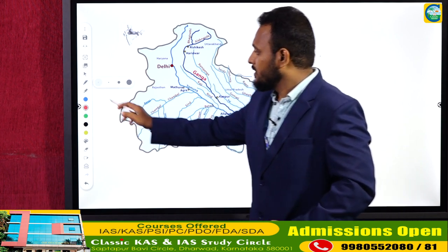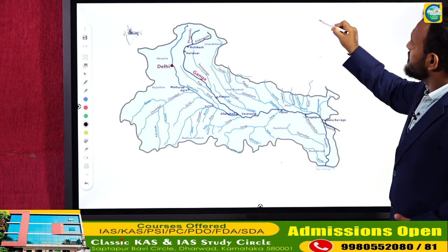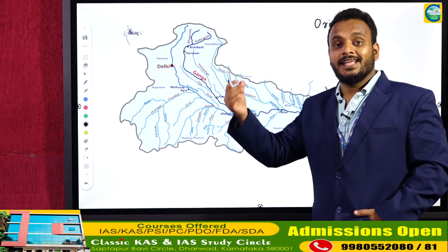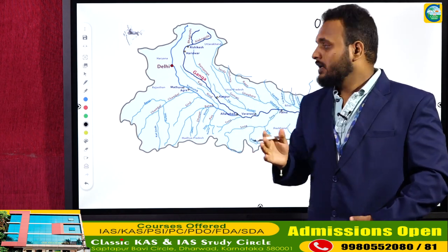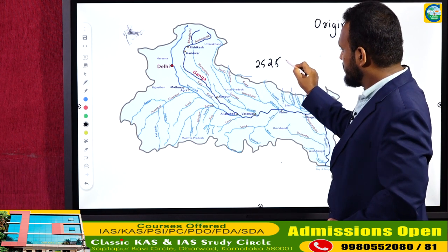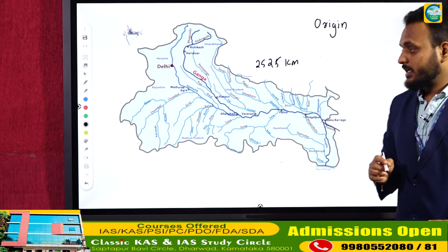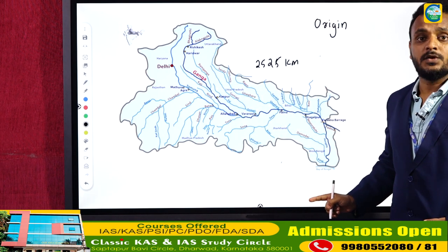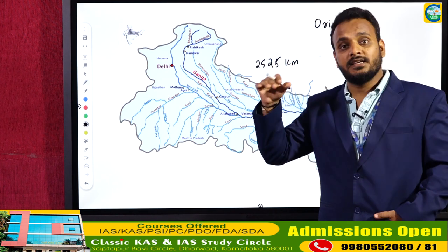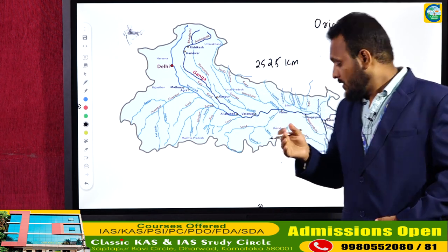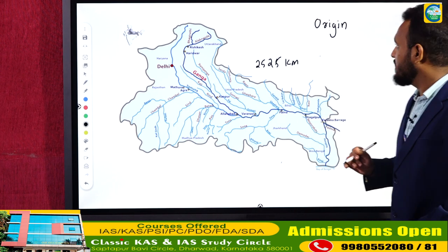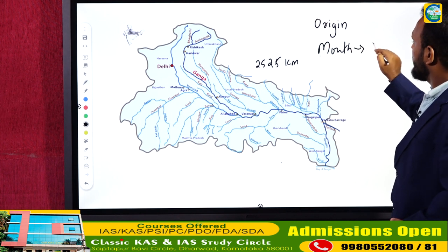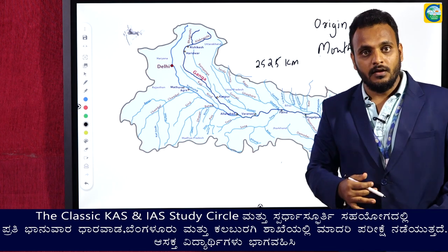The first thing I am going to write is about the origin of Ganga river. The length of the river is 2525 kilometers from its source point to its mouth. The mouth is the location where it drains itself. The mouth of Ganga is Bay of Bengal, where it drains in two distributaries. After Ganga crosses Farakka Barrage in West Bengal, it creates two streams — one is Hooghly and the other is Padma.